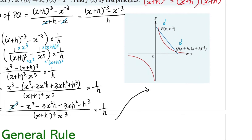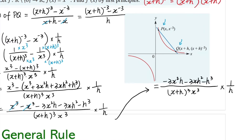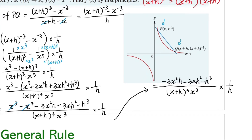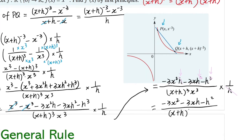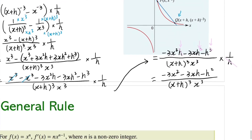Expanding the brackets, x cubed minus x cubed cancels out nicely, and we're left with negative three x squared h minus three x h squared minus h cubed, all over (x plus h) cubed times x cubed, times one over h. In the numerator all terms have h in them, so we can cancel the h with the one over h in the denominator. We're left with negative three x squared minus three x h minus h squared, all over (x plus h) cubed times x cubed.